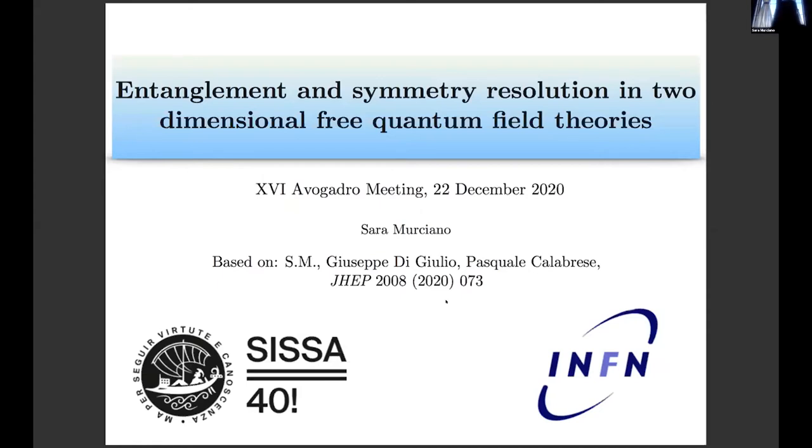The relevance goes from high energy physics for the study of black hole physics or in holography, but also in condensed matter systems because it allows to show universal properties of systems at criticality. Another pillar of modern physics are symmetries, so the goal is to understand how the presence of a global U(1) symmetry in a system influences the behavior of the entanglement. The results are collected in this work that I've done with Giuseppe Di Giulio, another PhD student in SISSA, and my supervisor Pasquale Calabrese.